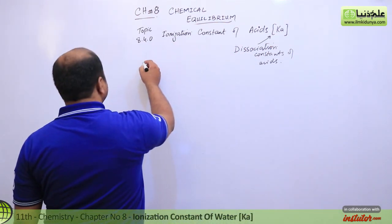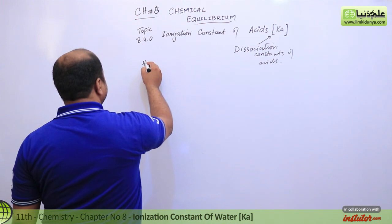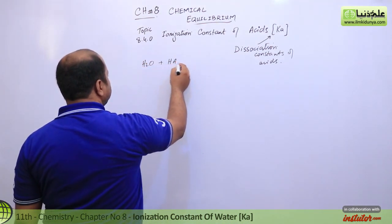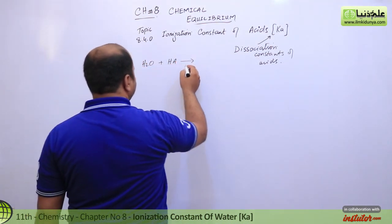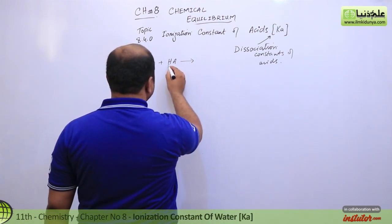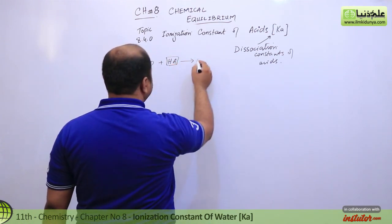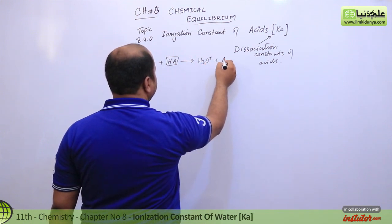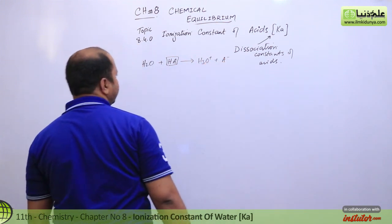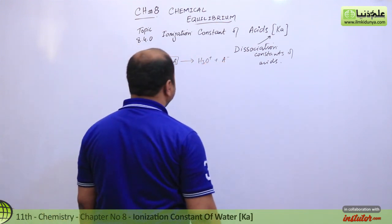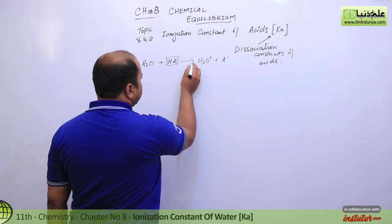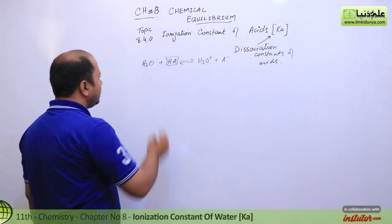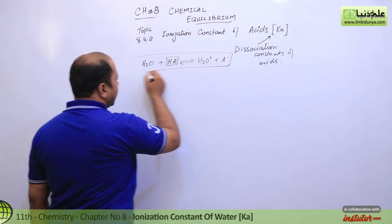Just like we have water, we will put acid in water. Let's say that we have any acid. This acid will give its hydrogen ion to water, and hydronium ion will form along with a negative radical. But this is interconvertible — they can come back and go back. So that's the equation.